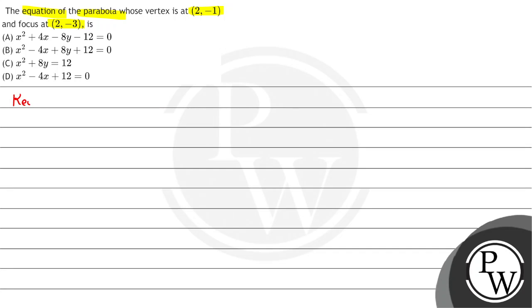First of all, what are the key concepts here? The general equation of parabola. So, general equation of parabola is (x - h)² = -4a(y - k).